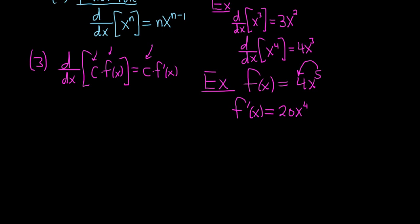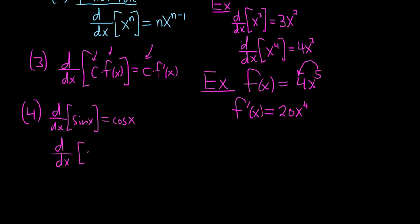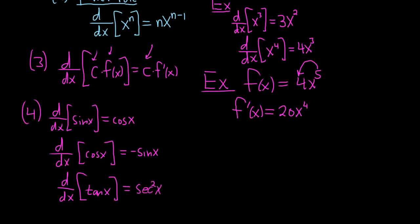Let's look at the derivatives of some trig functions. The derivative of sine is cosine — totally worth memorizing. The derivative of cosine is negative sine. The derivative of tangent is secant squared. You might say you'll never memorize that, but don't worry — after doing lots of problems, if other people can learn calculus, you can learn calculus, and the derivative of tangent is secant squared.